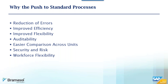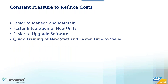Standard processes help with security and risk by building in workflows, standard roles, governance, risk, and compliance controls. Companies like SAP have built security around best practices and better managed access to key data fields. Workforce flexibility improves — if you use standard processes, you have more flexibility in moving people around the organization. On cost reduction, it's easier to manage and maintain without hundreds of custom Z-tables, Z-codes, and Z-options, and upgrades can be done faster.